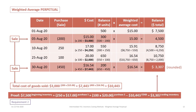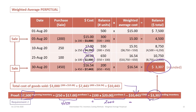To check that our ending inventory is correct, we can prove it. Starting with $7,500 in beginning inventory, we add the cost of purchases — $4,250 on the first purchase and $2,000 on the second — then subtract the total cost of goods sold of $10,443. This gives us $3,307, confirming our ending inventory balance. It may be off slightly due to rounding, but otherwise we've proven that it works.